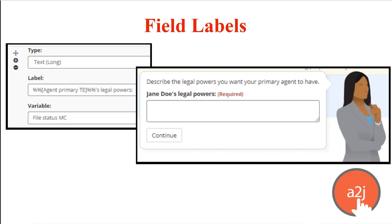This just shows the same sort of thing with a field label. They said Jane Doe is their primary agent. Now they can clarify what legal powers to give to Jane, to avoid confusion with their secondary agent. It takes very little time for you as an author to add these little extra touches that greatly reduce the confusion an end user may experience while completing complicated legal paperwork.